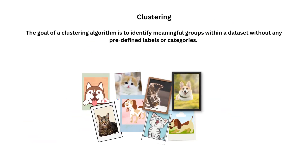Let's understand how unsupervised learning works by taking two typical techniques: clustering and association. Clustering algorithms identify meaningful groups within a dataset without predefined labels or categories.